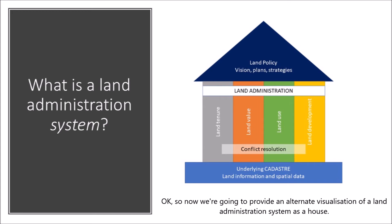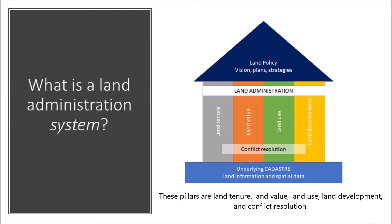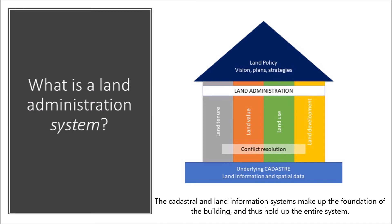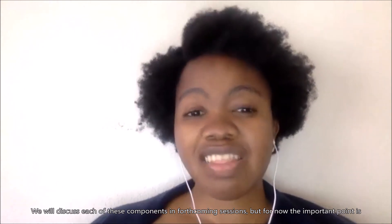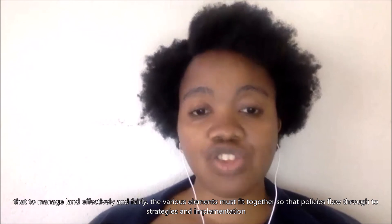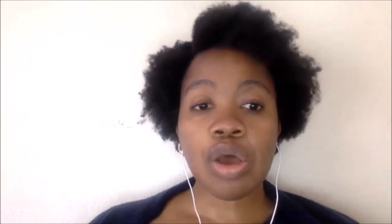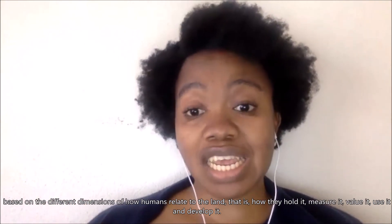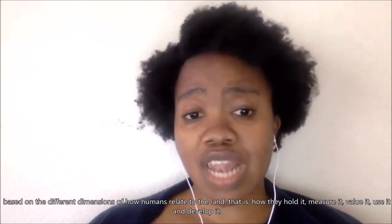Now we're going to provide an alternative visualization of the land administration system — we're going to show it as a house. The land policy is the roof of the house, while the components of land administration are the supporting pillars. These pillars are land tenure, land value, land use, land development, and conflict resolution. The cadastral and land information systems make up the foundation of the building, and thus they hold up the entire system. We will discuss each of these components in the forthcoming sessions, but the important point is that we need to manage land effectively and fairly. The various elements must fit together so that the policies flow through to the strategies and the implementation, based on the different dimensions of how humans relate to land — that is, how they hold land, measure land, value land, use land, and develop land.